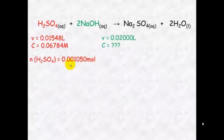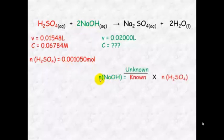We can now use this and the mole relationship here or the mole ratio between the sulfuric acid. So one mole of sulfuric acid reacts with two moles of sodium hydroxide. We use this to work out the number of moles of sodium hydroxide, it is unknown over known times the amount that we have just figured out here.